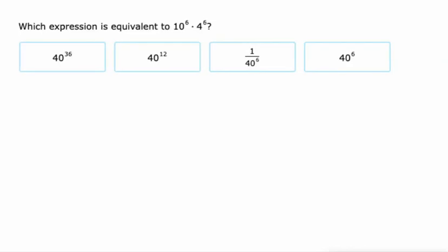Here's another one. Different bases, but same exponent now. We're going to keep that exponent, 6, and multiply the bases. So that's 40 to the 6th power. Not to be confused with 40 to the 36th power. We don't multiply the exponents. In this case, we only multiply the bases.